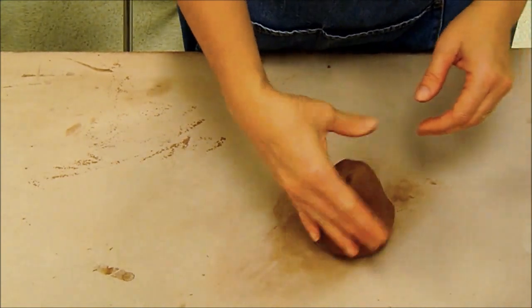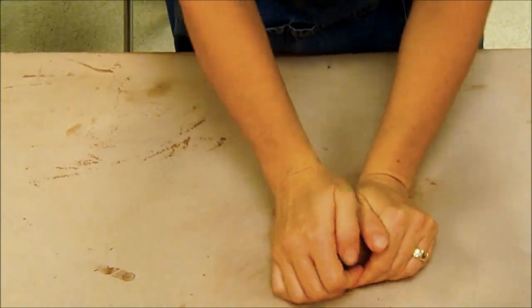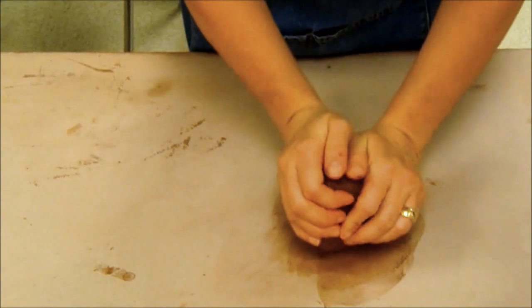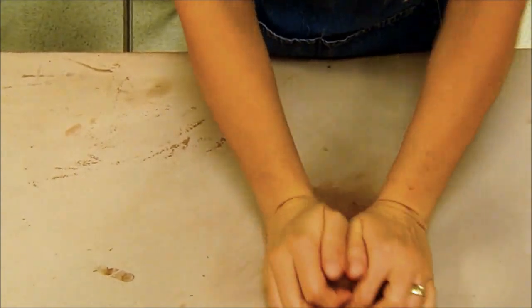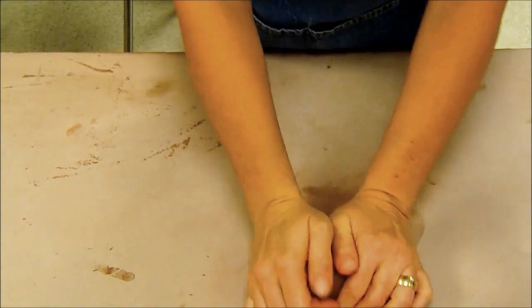Now what we're going to start off with is some earthenware clay. I'm just going to wedge up some scrap into my hunk here. Remember that when you wedge, the point of wedging is you want to mix the clay together. You want to have a nice even consistency of clay.